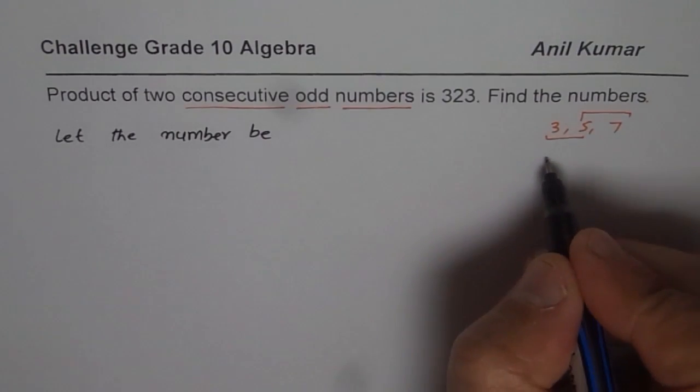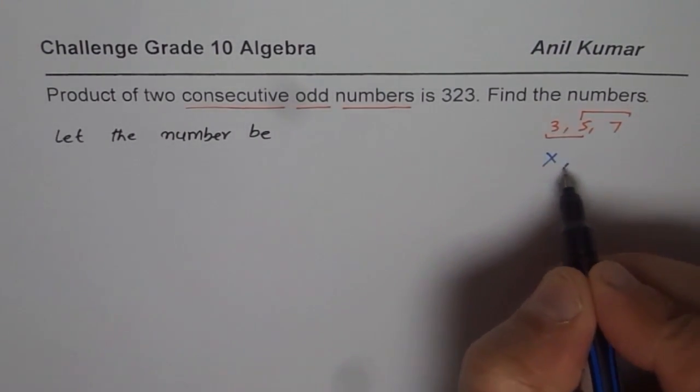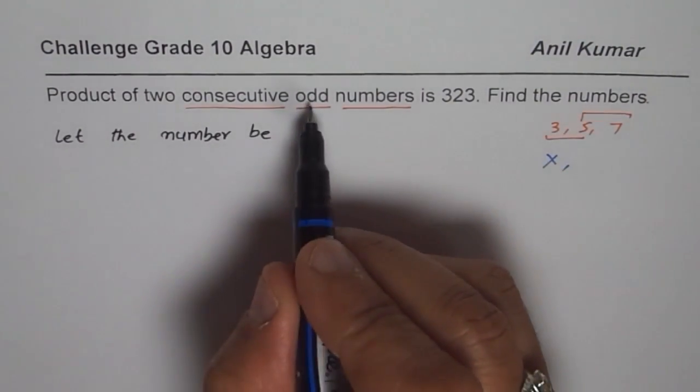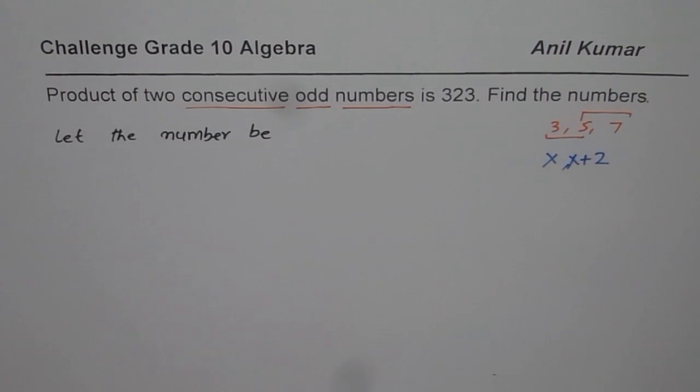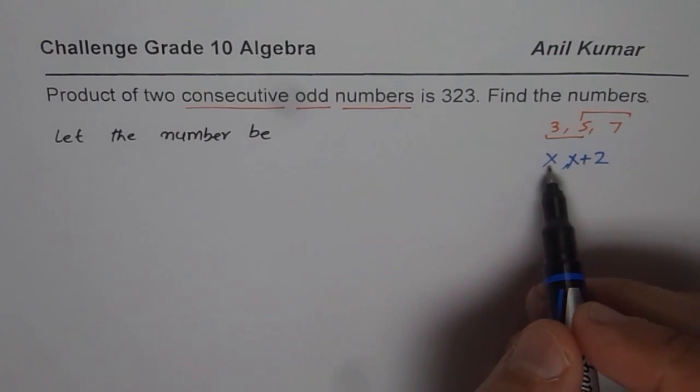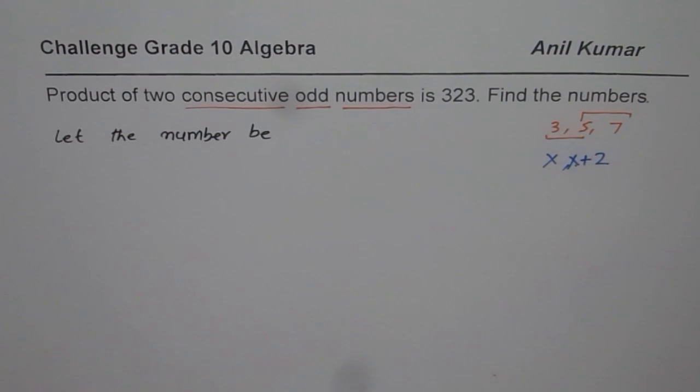If I select one number as x then the other number should be how much? We are saying consecutive odd that means I have to skip one. So I should write here as x plus 2. That is how I can get consecutive odd numbers. If 1 is 3 then 3 plus 2 is 5. I think you got the idea.